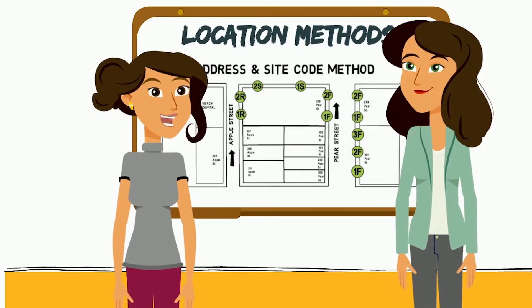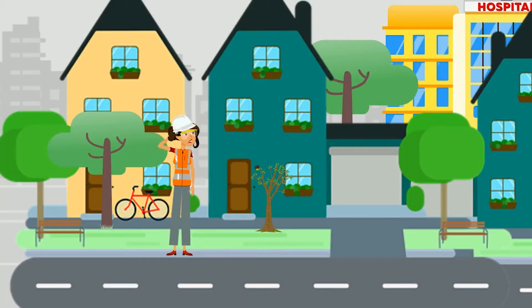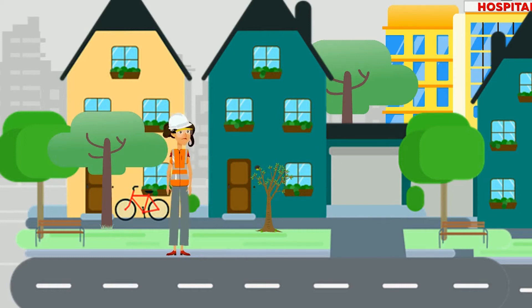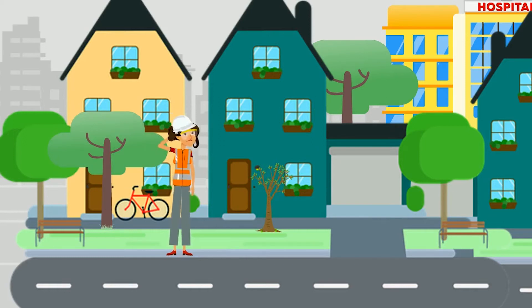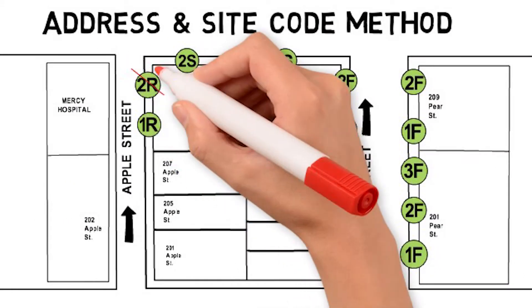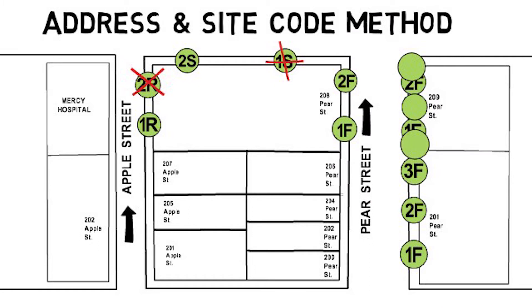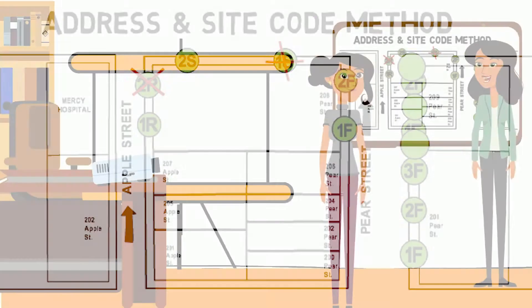I've used that method for street trees, but when I go back to the trees a few years later, the sequence gets all messed up by old trees removed and new trees added. That can definitely happen, which is why this location method works well enough in the short term, but over the long term it tends to fall apart in these changing urban landscapes.